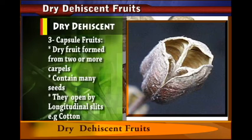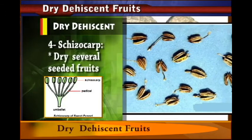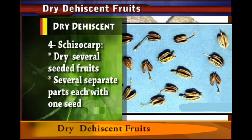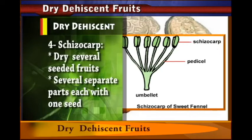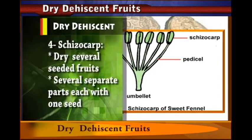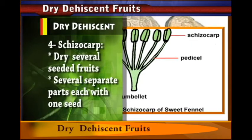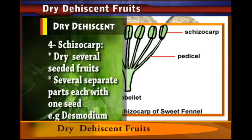The last type of dry dehiscent fruit we will discuss is the schizocarp. Schizocarps are dry, several-seeded fruits which break into several separate parts, each part containing one seed. You find that it is one package, but it breaks up into several separate parts and each part has one seed. An example of schizocarps is desmodium, which is a dry dehiscent fruit.